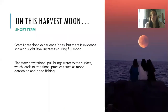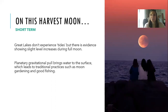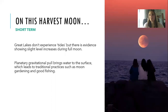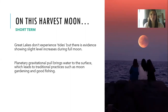Another short-term reason for lake level fluctuations is the moon and its gravitational pull. Although the Great Lakes don't experience tides per se, there is evidence showing a slight level increase during full moons. This planetary gravitational pull also brings groundwater to the surface. There's a lot of traditional folklore around moon gardening or planting your vegetable gardens based on when the moon is full or waxing or waning, and that also coincides with good fishing.